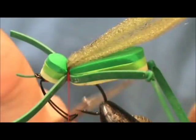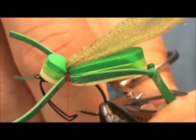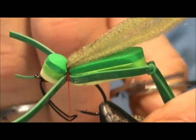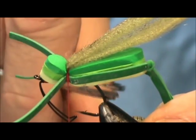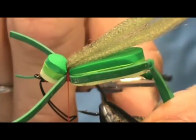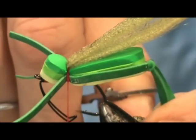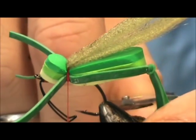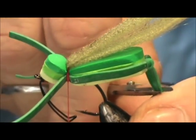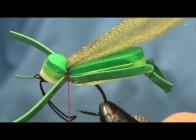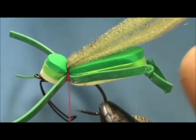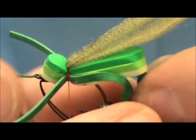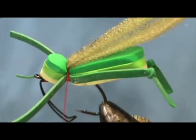I'm going to take the scissors and trim them. And you want to trim them so they're hanging. You want to cut them about at the middle of the hook gap. Yeah, I got a little glue on there. There we go.